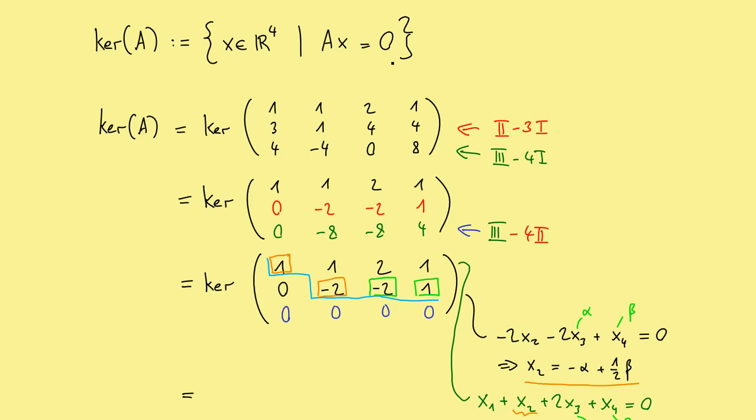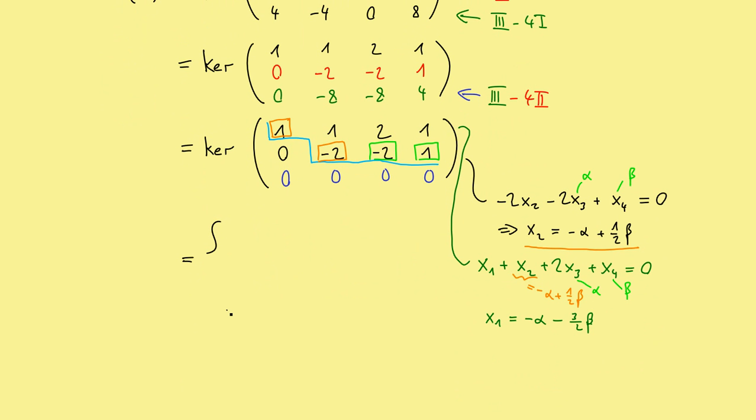So now we can just write the solution set. There is the kernel, set brackets here. And then we have the vector. So it's minus alpha minus 3 half beta comes from the x1 component. And then we have the x2 component, minus alpha plus 1 half beta. And x3 and x4 were the free variables, just alpha and beta here. And most importantly, don't forget to write alpha, beta coming from R. So R, elements in R. And this is the whole solution set, arbitrary vector given in this form, where alpha and beta coming from R.